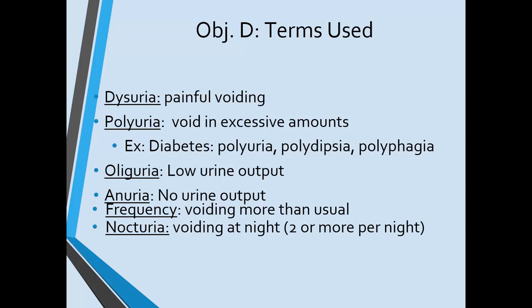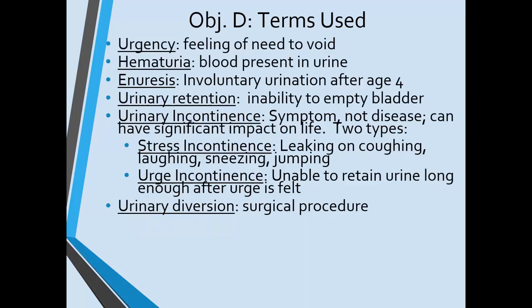Frequency can be related to UTI or pregnancy, and is simply voiding more than usual. Nocturia is getting up to go at night; educate the patient not to drink caffeine or alcohol after suppertime, as both have diuretic effects. Urgency can be normal if the urinary system is working correctly and the bladder is full — that feeling of 'I gotta go now.' Hematuria, or blood in the urine, can be present with a UTI. Sometimes the blood is microscopic and not visible directly, but when visible we want to question why it's there — such as whether the specimen is contaminated by menstruation.